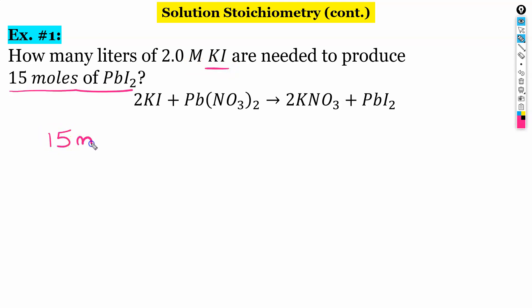So we have 15 moles. And we know that in our equation, for every one mole of lead iodide, we have 2 moles of potassium iodide. So 15 times 2 over 1 is just 30 moles of potassium iodide.